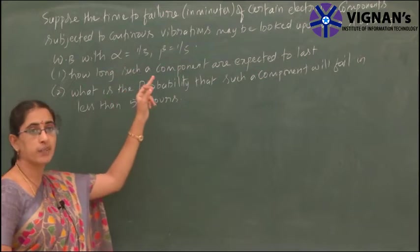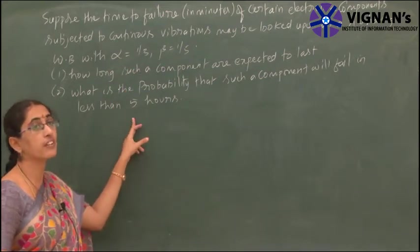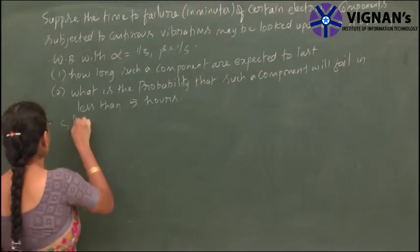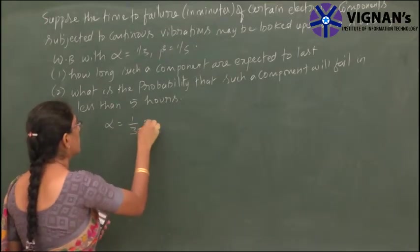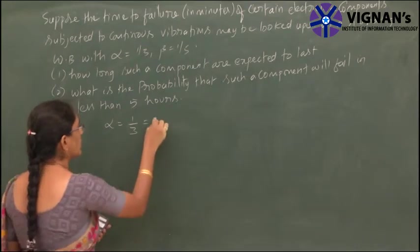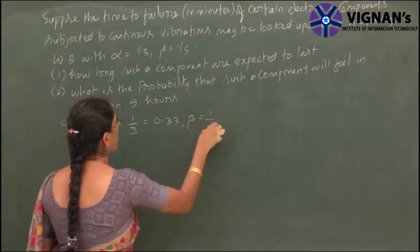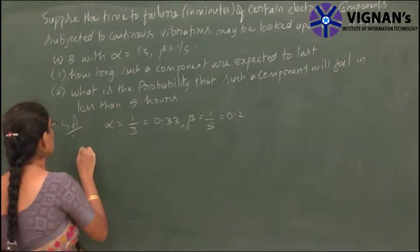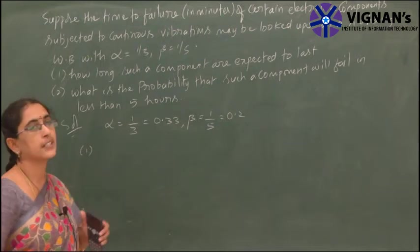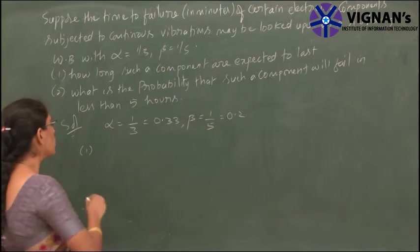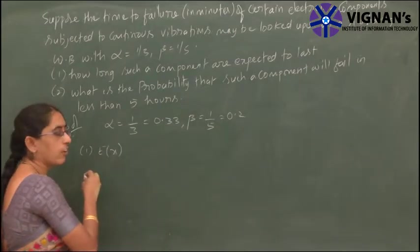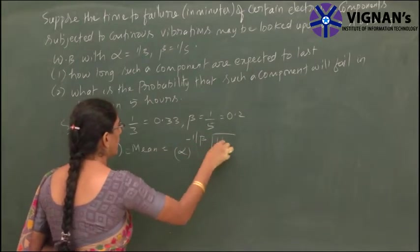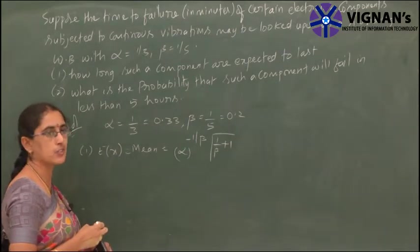The data is given in terms of minutes, and they are asking for the probability of failure in less than 5 hours, so we need to convert 5 hours into minutes. Alpha is given as 1/3, which is 0.33, and beta is given as 1/5, which is 0.2. First, we find how long the component is expected to last, meaning the mean. We know that the mean E(X) equals alpha^(-1/beta) times gamma(1/beta + 1).